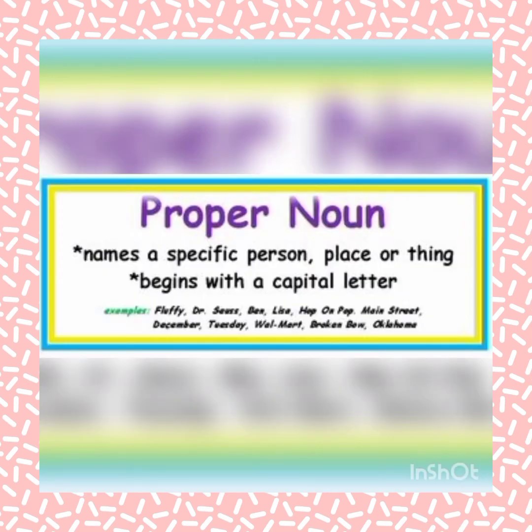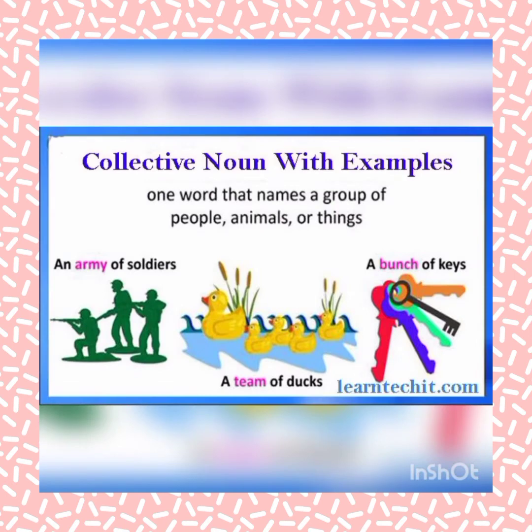Next one, proper noun. Proper nouns name a specific person, place or thing. It begins with a capital letter. Next one, collective noun — one word that names a group of people, animals or things. For example, an army of soldiers, a team of chicks, a bunch of keys.